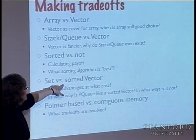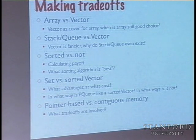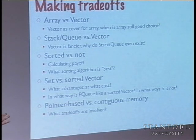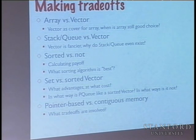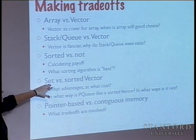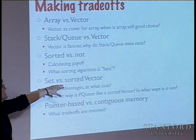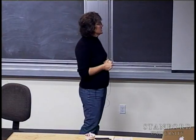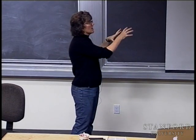Set versus sorted vector. These actually solve a lot of the same problems and differ in only one small way. A set is backed by a balanced binary search tree, so it is a sorted data structure internally. If your goal is to keep track of students at Stanford and look people up by name, the set's contains operation does a binary search tree traversal to find it. Binary search on a sorted vector follows the same path through the data. So we can make searching operations like contains logarithmic in both cases.